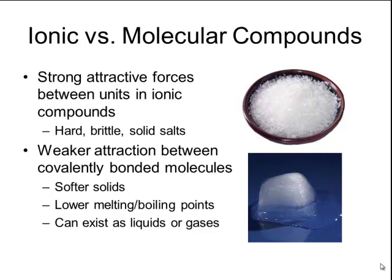In contrast, molecular compounds have a much weaker attraction between their covalently bonded molecules. This weaker attraction causes molecular compounds to be softer solids with much lower melting and boiling points. For example, ice is the solid state of the molecular compound water, and its melting point is 32 degrees Fahrenheit — so at room temperature it will melt. On the other hand, table salt, or sodium chloride, is not going to melt at room temperature. In fact, the melting point of sodium chloride is almost 1500 degrees Fahrenheit. Because of these lower melting points and boiling points, it is common to find molecular compounds that exist as liquids or gases under standard room temperature conditions.